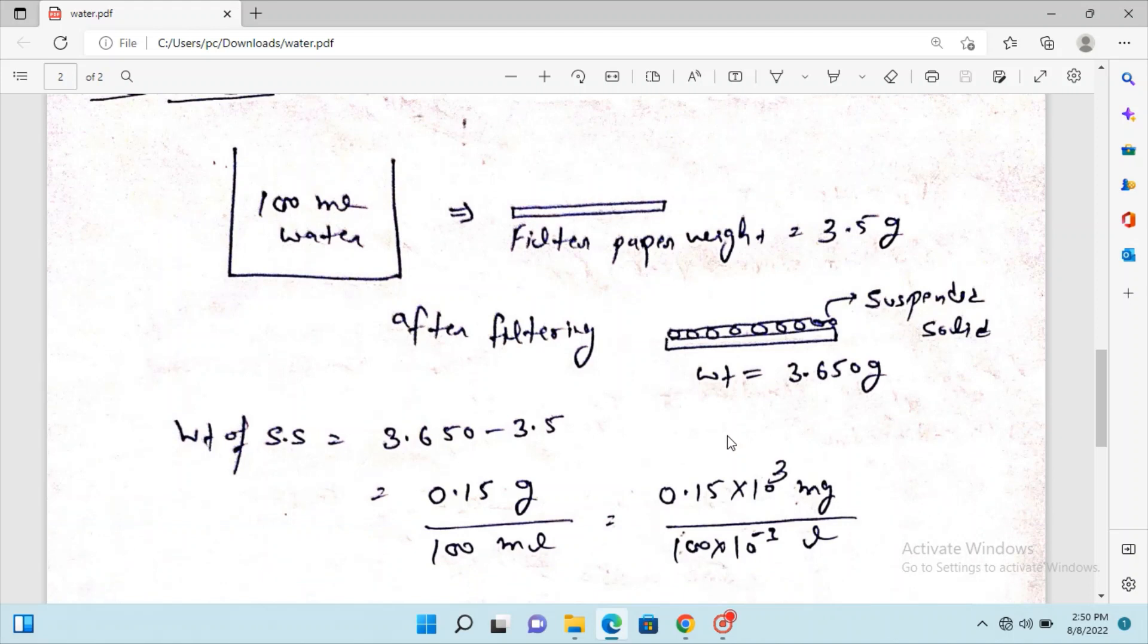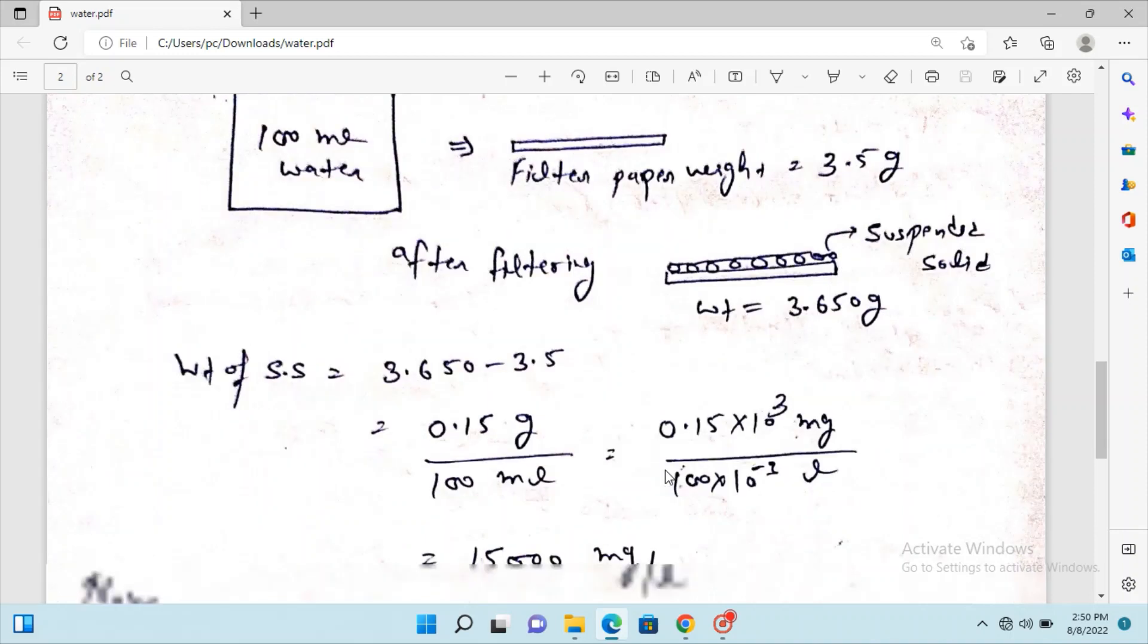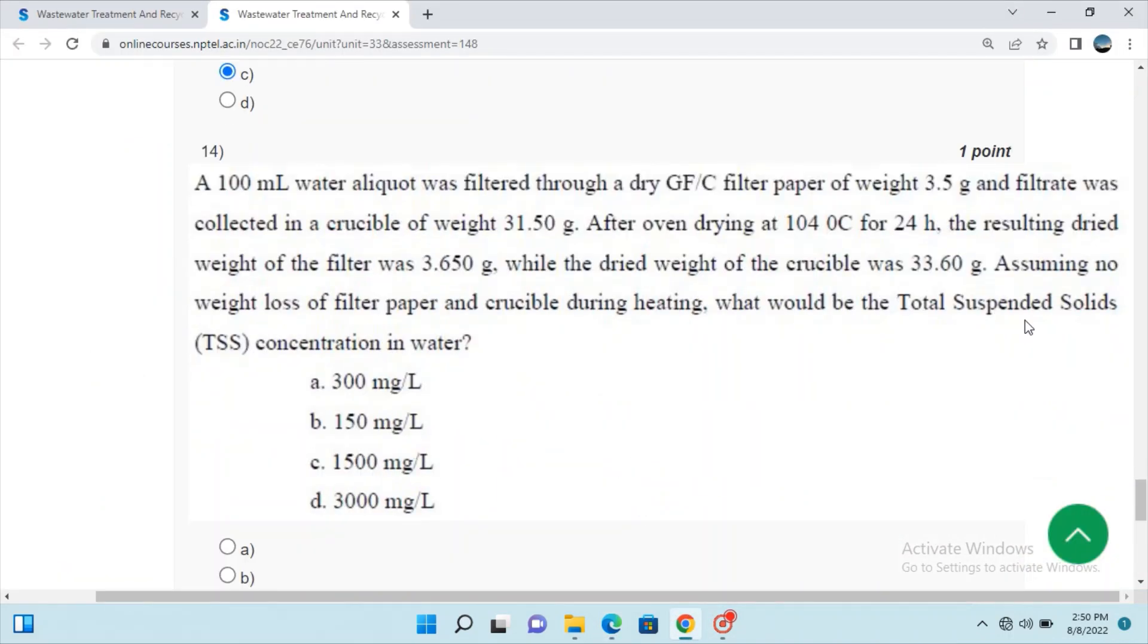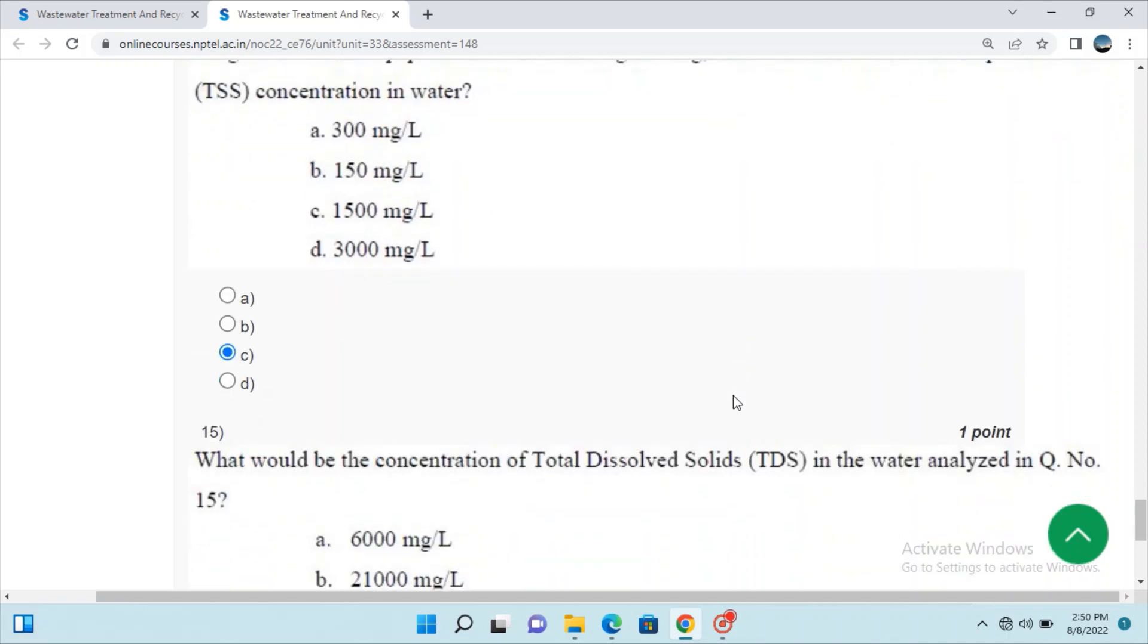For the solution of question 14: We take 100 ml water and filter it. The filter paper weight is 3.5 grams initially, and after filtering it's 3.65 grams. The weight increased due to attached suspended solids. The weight of suspended solids equals 3.65 minus 3.5, which is 0.15 grams. Converting to concentration, the answer is 1500 milligrams per liter of suspended solids.